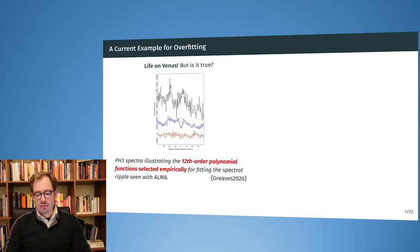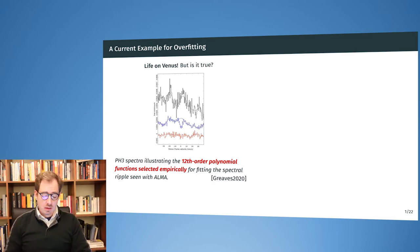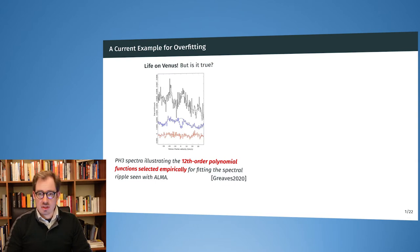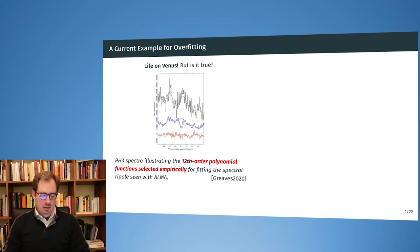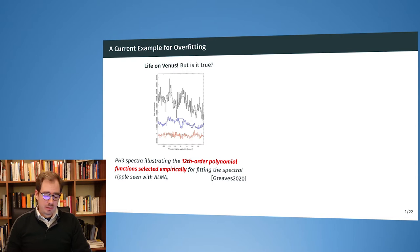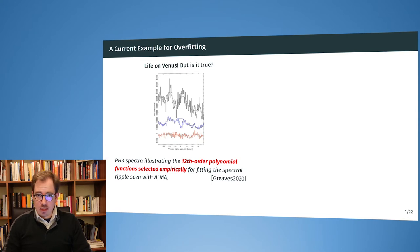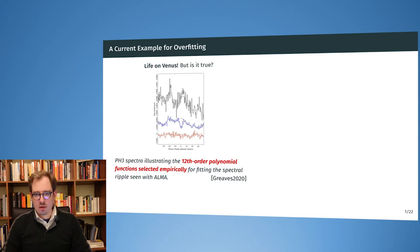Before we dive into the main topic of today, let's have a look at a recent example where we see the effects of overfitting, which we saw earlier in the course. This year there was a publication in Nature, the most prestigious journal, claiming evidence for phosphine gas on the planet Venus. This was a small sensation because phosphine gas could not have been of normal origin on Venus — it was a hint towards life being present. The researchers were looking at the spectral signature coming from Venus, fitting a 12th order polynomial, and found evidence for the presence of phosphine gas.